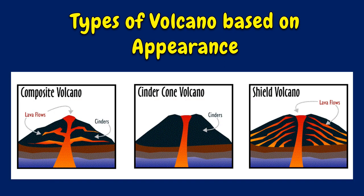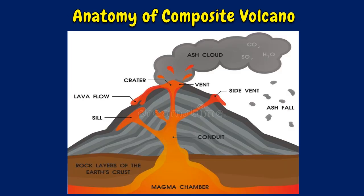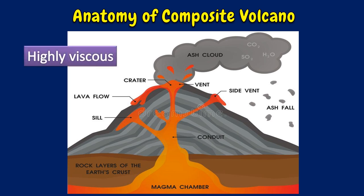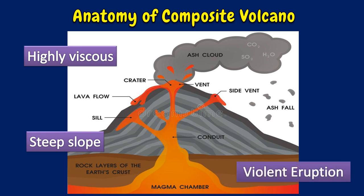There are three general types of volcano based on appearance: composite, cinder cone, and shield volcano. Composite volcanoes are some of the Earth's grandest mountains, also called stratovolcanoes. They are typically symmetrical cones of large dimension built of alternating layers of lava flows, steep-sided volcanic ash, blocks, bombs, and cinders, and may rise as much as 8,000 feet above their bases.